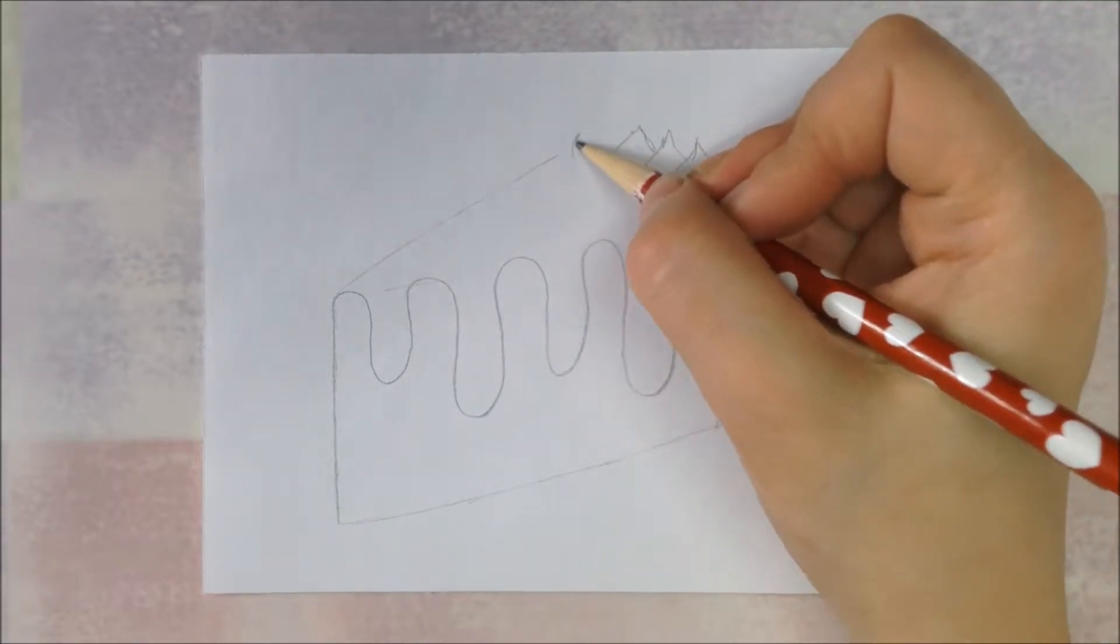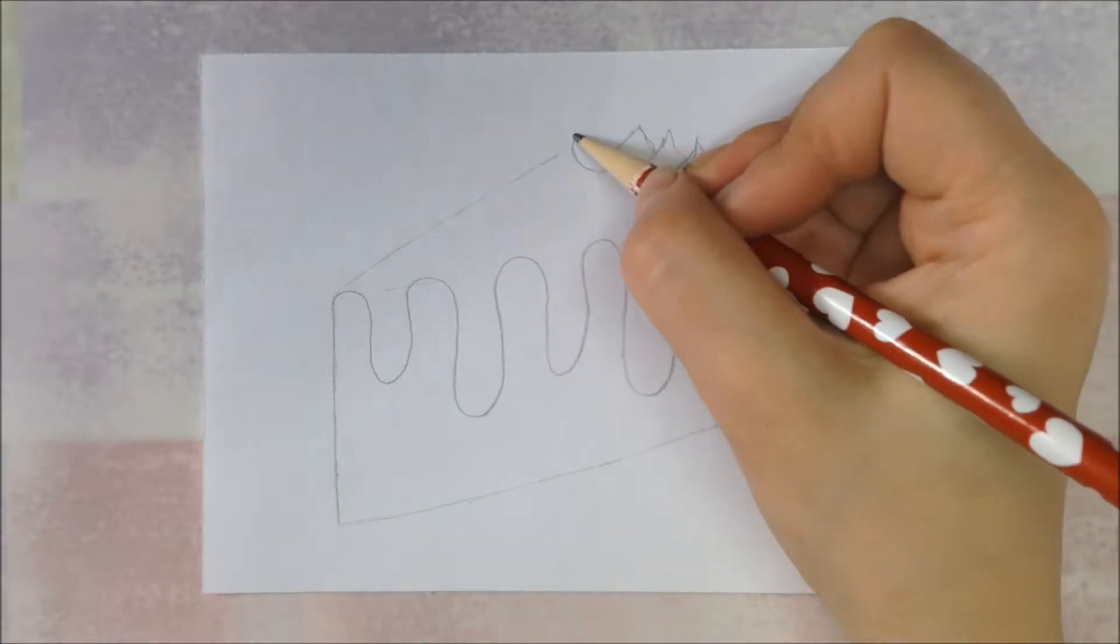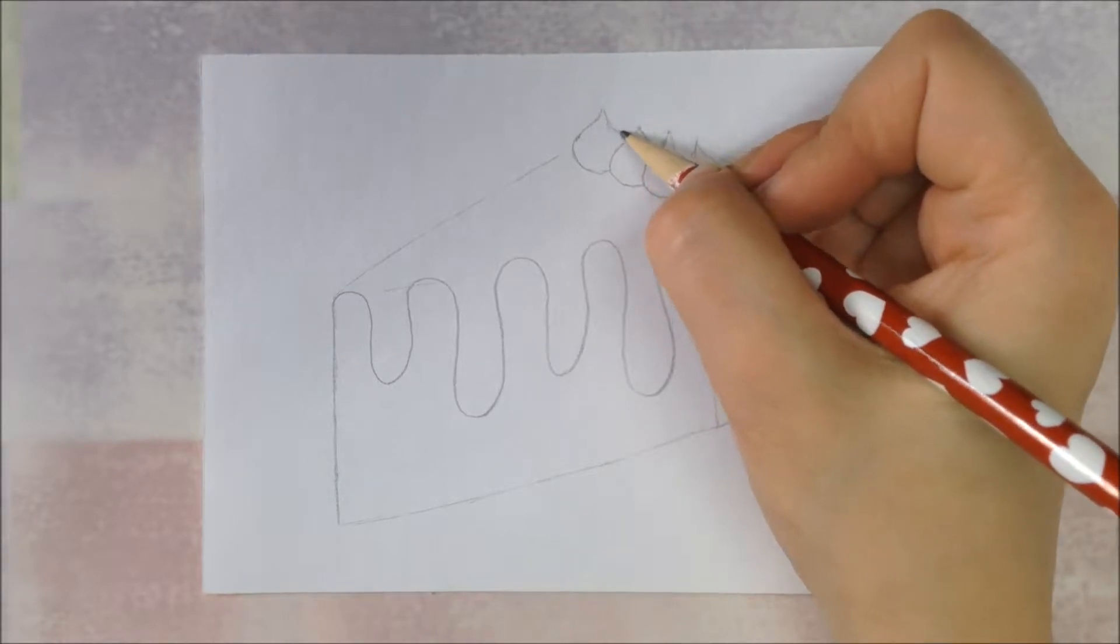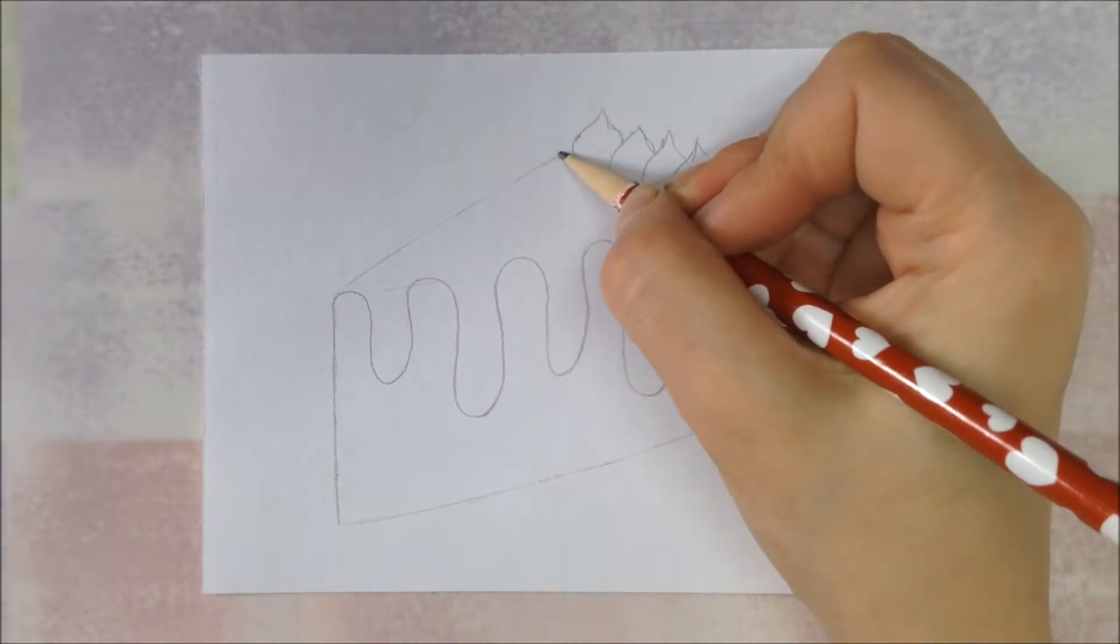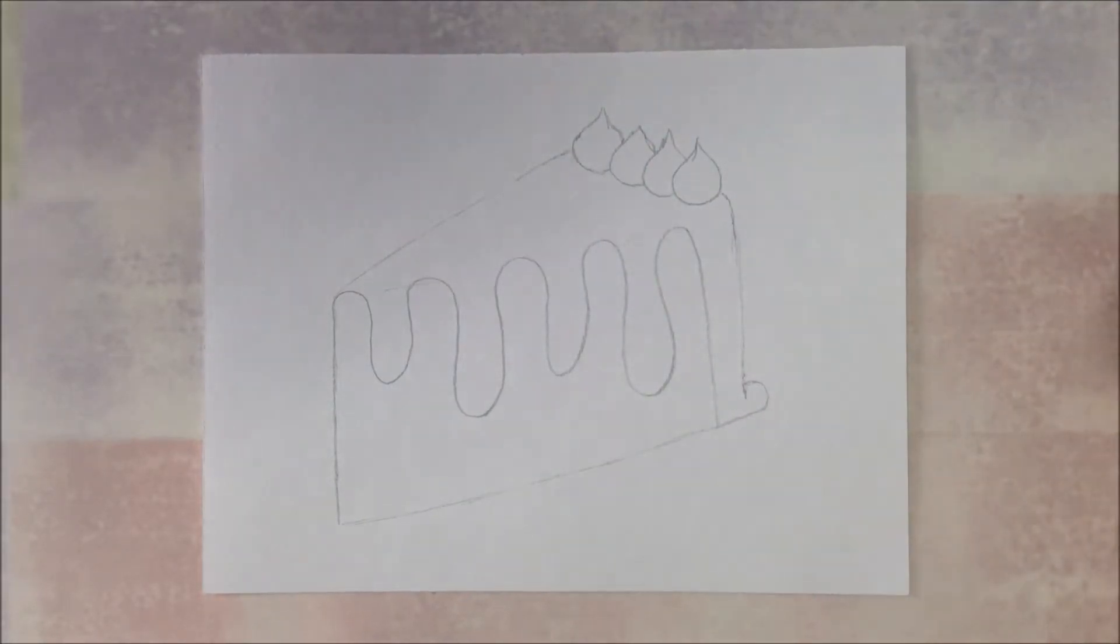And then a fourth one. And if you have room for another one, you can put another one, or if you only ended up with three, that's fine too. Alright, and that finishes the basic cake shape for our cake.